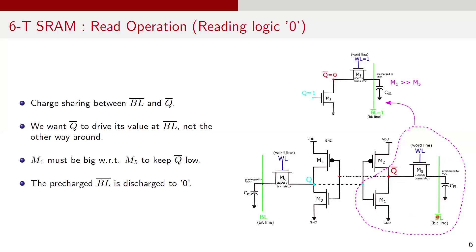Finally, the pre-charged BL bar is discharged to logic 0 completing the read operation. After the read operation, BL is 1 and BL bar is 0. Similar to M1, M3 needs to be larger than M6 to maintain data integrity and avoid unintended state changes.